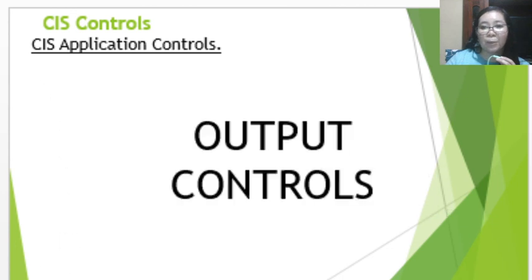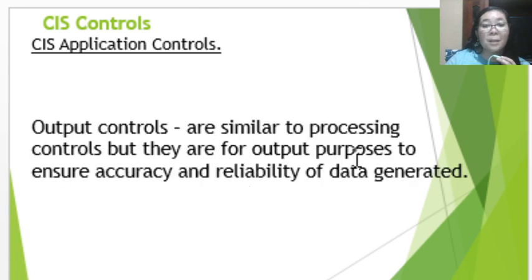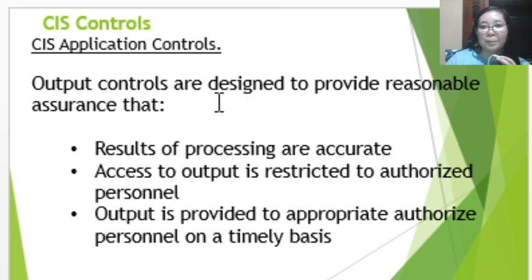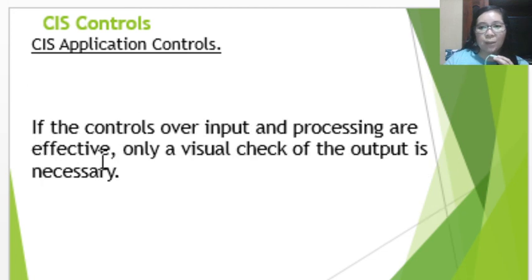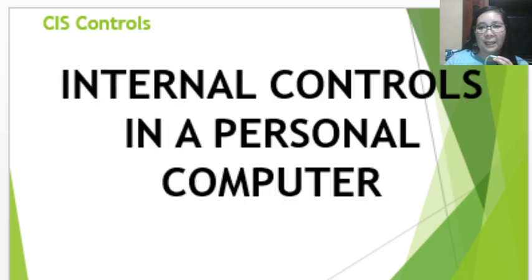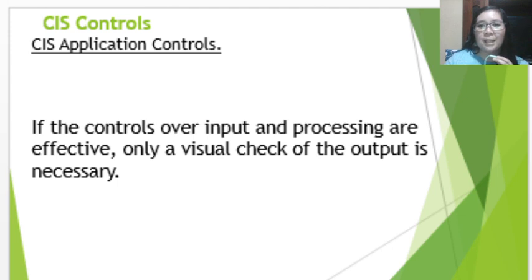Lastly are the output controls. These are similar to processing controls but apply to output purposes, ensuring accuracy and reliability of the data generated. Output controls are designed so that the results of processing are accurate, access to output is restricted to authorized personnel only, and output is provided to appropriate authorized personnel on a timely basis. If controls over input and processing are effective, only a visual check of the output will be necessary. Those are the CIS application controls.